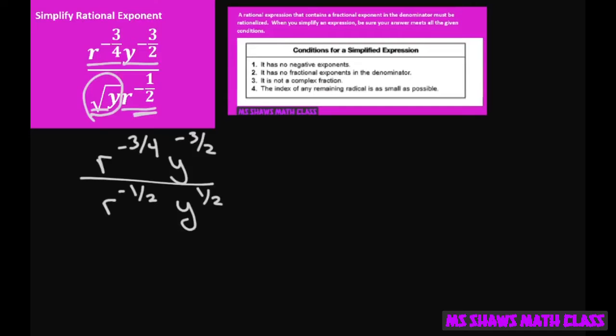Now using your quotient property of exponents, since they're in the denominator, I can say this is r to the negative three-fourths minus a negative one-half. This gives you r to the negative three-fourths plus one-half. That means you're going to get r to the negative three-fourths plus, if I have a four here, this is going to be two.